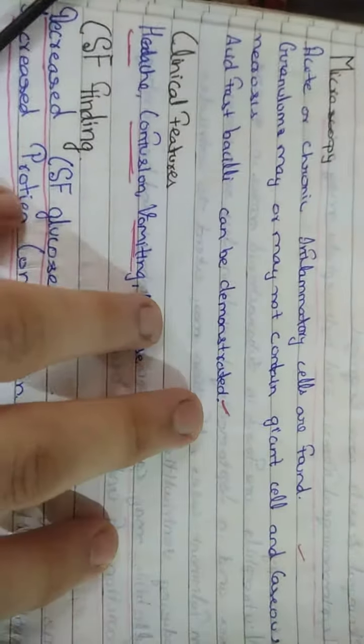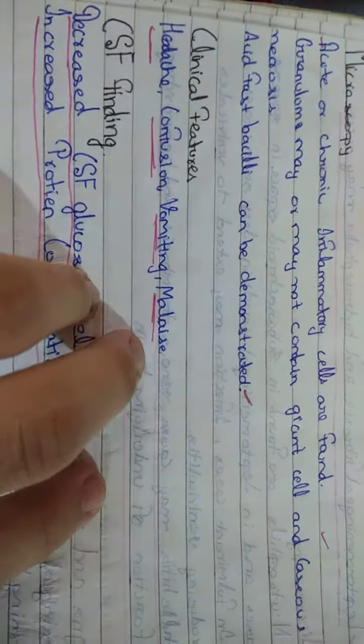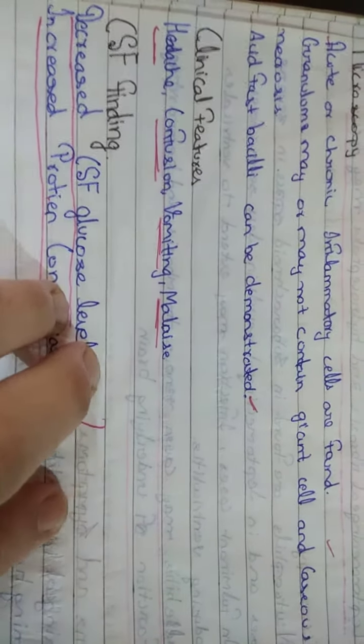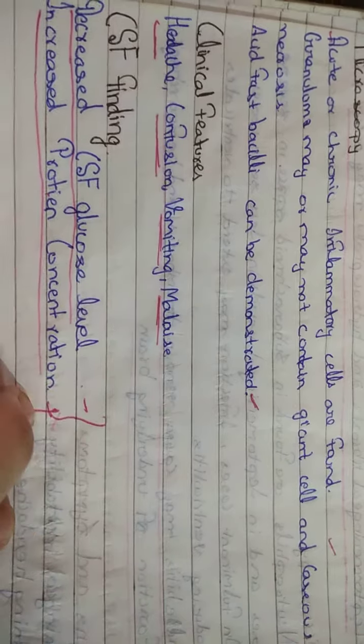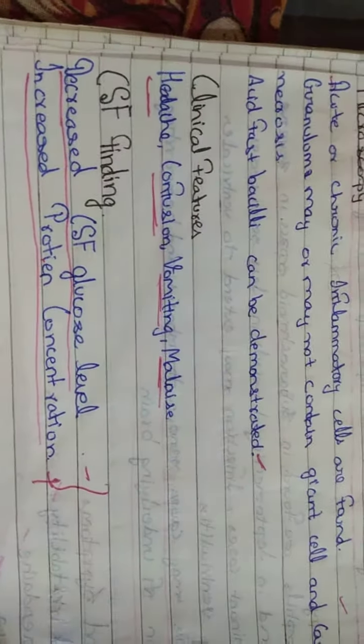Clinical features are headache, confusion, vomiting, and malaise. CSF findings: decreased CSF glucose level as well as increased protein concentration. That's all about meningitis, thank you.